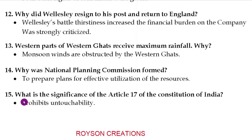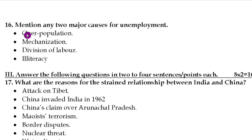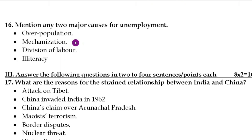Question number fifteen: what is the significance of Article 17 of the Constitution of India? The answer is it prohibits untouchability. Question number sixteen: mention any two major causes for unemployment. They have asked for only two causes; here are four — you can write any two: overpopulation, mechanization, division of labor, and illiteracy.